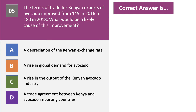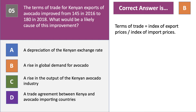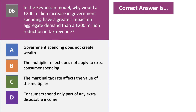Question five: the terms of trade for Kenyan exports of avocado improved from 145 in 2016 to 180 in 2018. What would be a likely cause of this improvement? The correct answer is B. Terms of trade is not the same as the balance of trade. The terms of trade represents the relative prices at which trade takes place — the index of export prices divided by the index of import prices. An increase in global demand for avocado would push the price up, meaning Kenya gets a better price per ton relative to the cost of their imports.